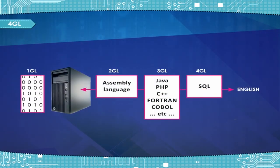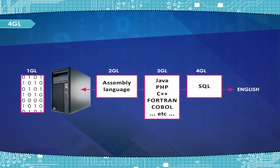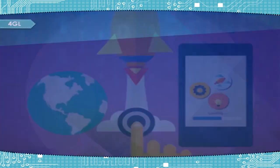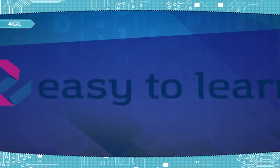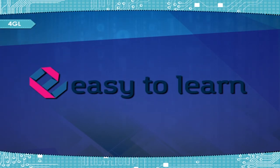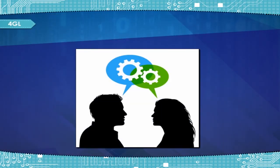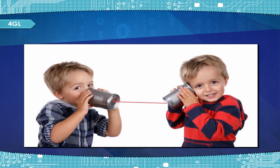4GL — Fourth Generation Language — allows non-programmer users to write programs to query databases and to generate custom reports. Characteristics of 4GL include: user-friendly, fast execution, easy to learn and program by non-programmer users, and use of artificial intelligence and neural networks. 4GL languages are closer to human language than other high-level languages and are accessible to people without formal training as programmers.